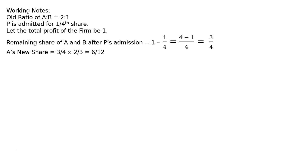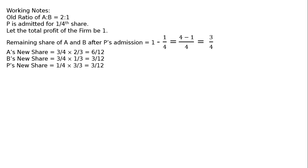A's new share: the remaining share of 3 upon 4 will be distributed in the ratio of 2 to 1. Hence, 3 upon 4 multiplied by 2 by 3 for A and 1 by 3 for B gives 6 by 12 for A and 3 by 12 for B. To equalize the denominator, C's one-fourth share equals 1 by 4 multiplied by 3 by 3, that is 3 by 12. Therefore, the new ratio of A to B to C is 6 to 3 to 3, equal to 2 to 1 to 1.